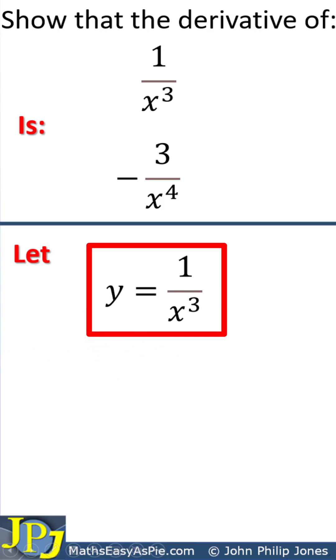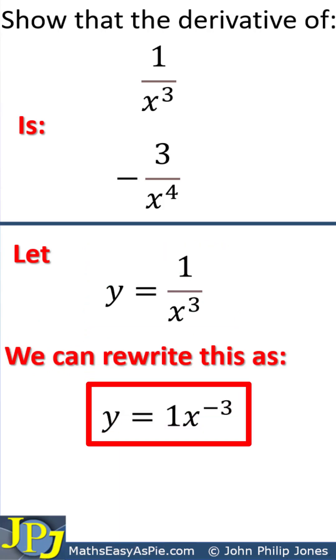Let y equals 1 over x³. We can rewrite this as y equals 1x^(-3), where this x³ has been brought to this position and we change the sign to negative.